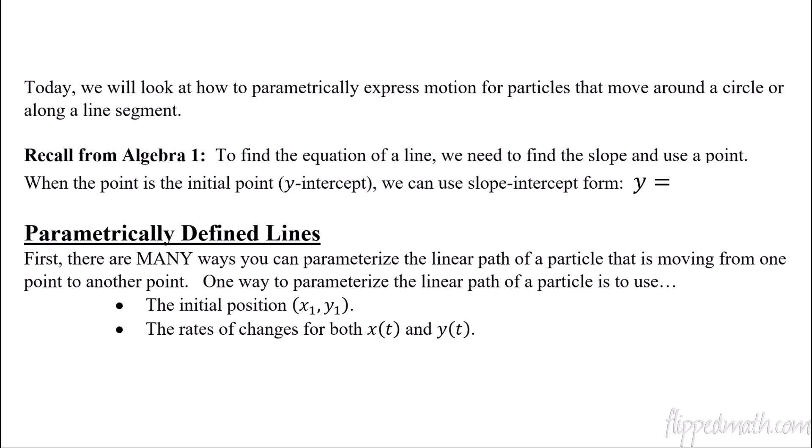So with lines, let's remember back to our algebra one days. Remember in algebra and pre-algebra where we would want to create an equation of a line, and all we needed was slope and a point. Now if that point was also the initial point, the y-intercept, then it was super easy. What was the form? It was slope-intercept form, which is y equals mx plus b, where you have your slope and you have your y-intercept, your initial value.